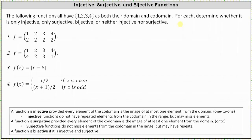For a quick review: a function is injective provided every element of the codomain is the image of at most one element from the domain. Injective functions do not have repeated elements from the codomain in the range but may miss elements. A function is surjective provided every element of the codomain is the image of at least one element from the domain.